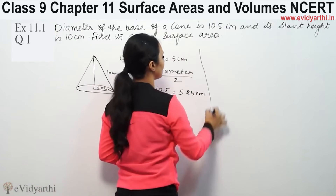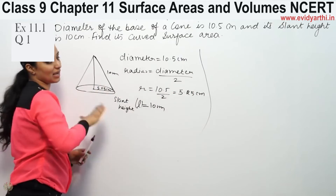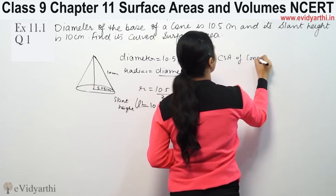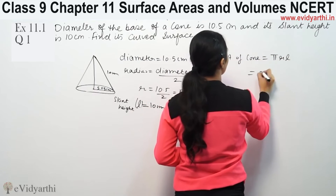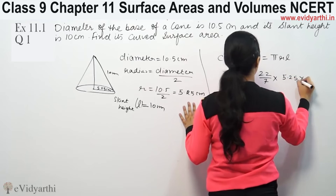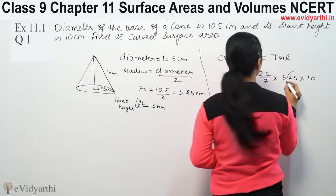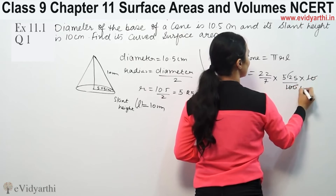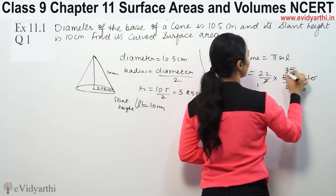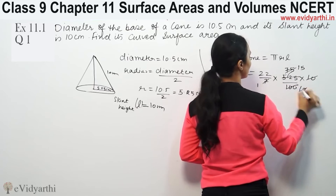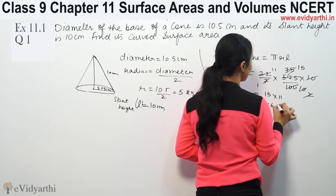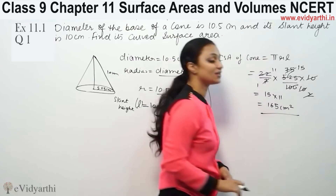Now we find the curved surface area. Curved surface area means only the upper triangular part of the cone — the base is not included. The curved surface area of a cone equals pi times R times L. So using pi as 22 by 7, radius as 5.25, and L as 10, the calculation gives us 165 cm².